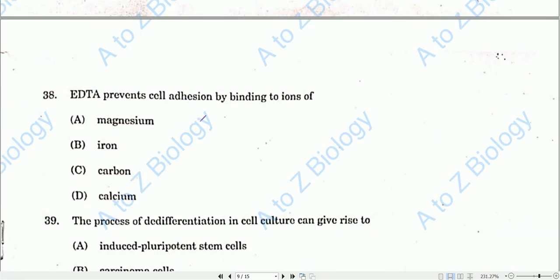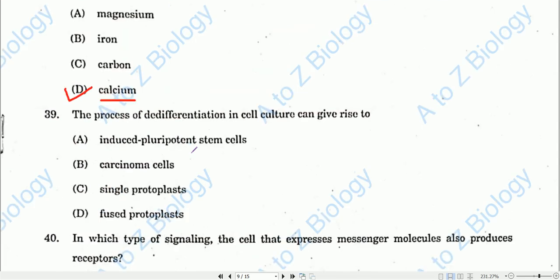Question number thirty-eight: The binding or adhesive capacity of cells is prevented or inhibited by application of EDTA (ethylenediamine tetra-acetic acid). EDTA binds to calcium, causing cells to lose their adhesive capacity.